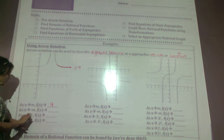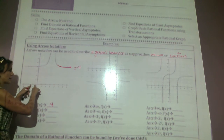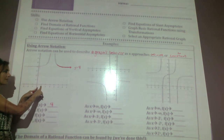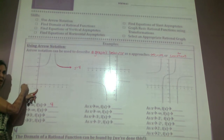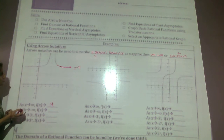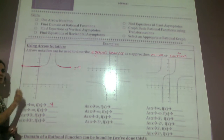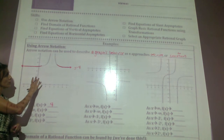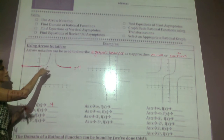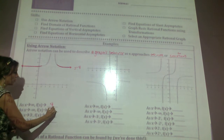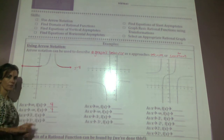Now let's think about: as x approaches negative infinity. If I were looking at numbers getting closer and closer to negative infinity, that would be the extreme left-hand side of this graph. We see that the graph is flattening out at y equals 4. So for both x approaches infinity and x approaches negative infinity, f of x is approaching 4.